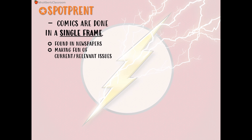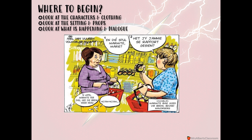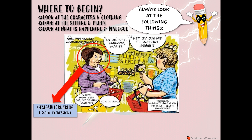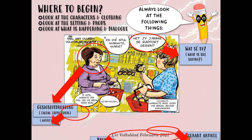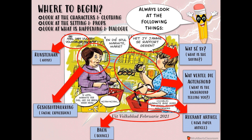Then we go to the comic. When comics are done in a single frame, you normally find them in newspapers and they make fun of a current or relevant issue. When we look at this one, you look at the characters and the clothing, the settings and the props, and what is happening as well as dialogue. There you have facial expression, what is being said, the artist, and your source as well as which newspaper it is from. Normally there would be an action as well, like picking something up or walking out.